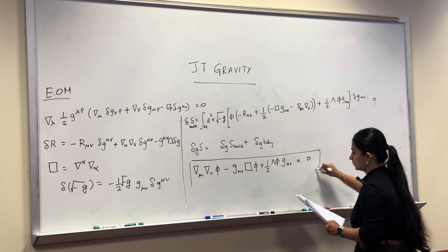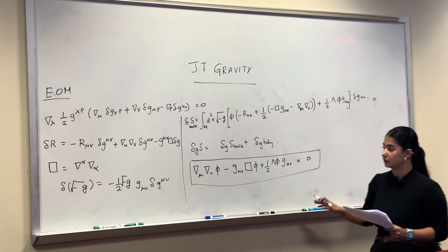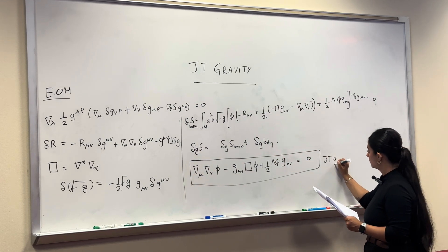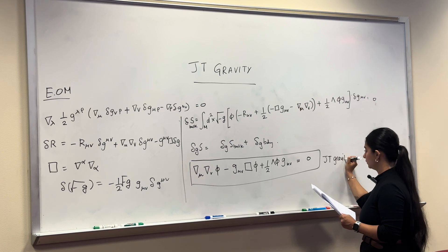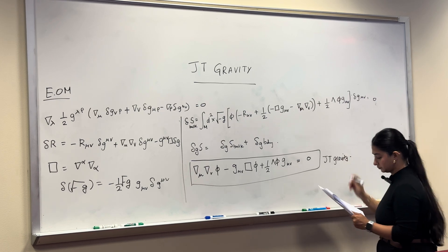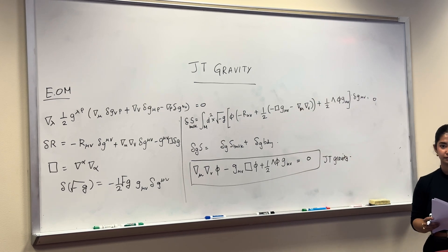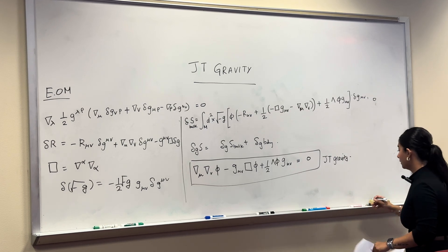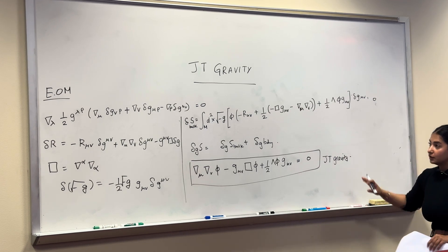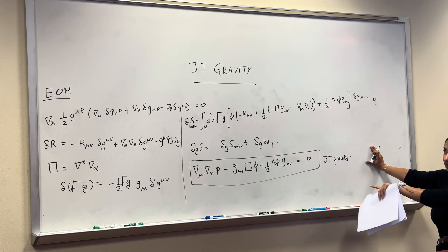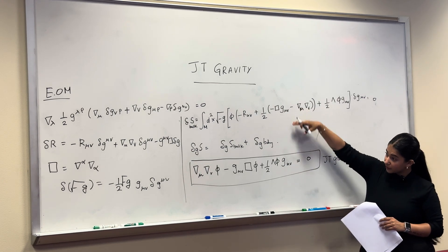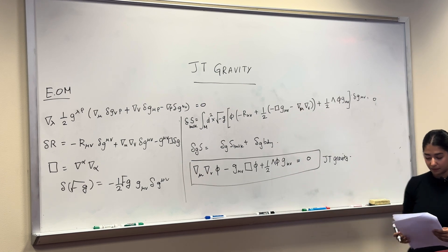This is the equation of motion — this is the equation of motion for JT gravity. As you can see, you can easily go from the variation to the final equation of motion by integration by parts.